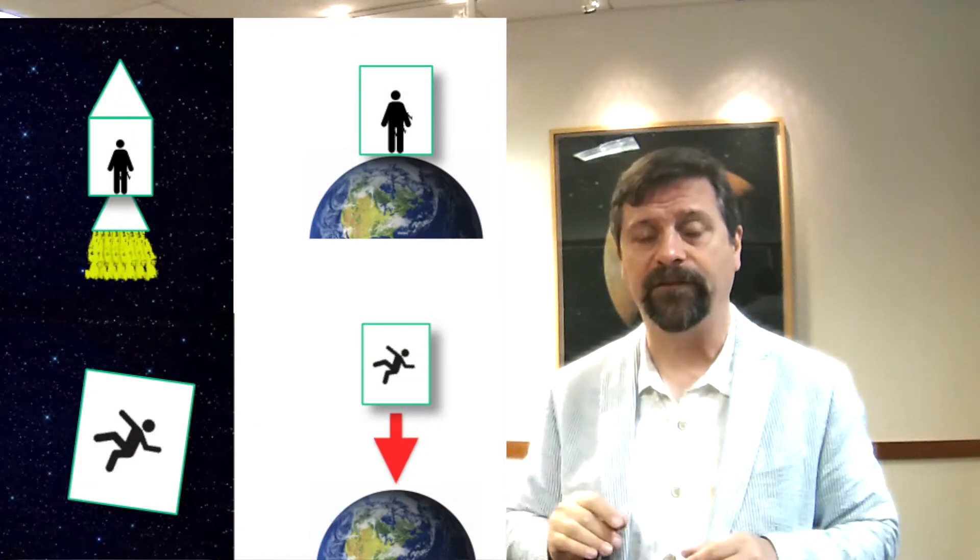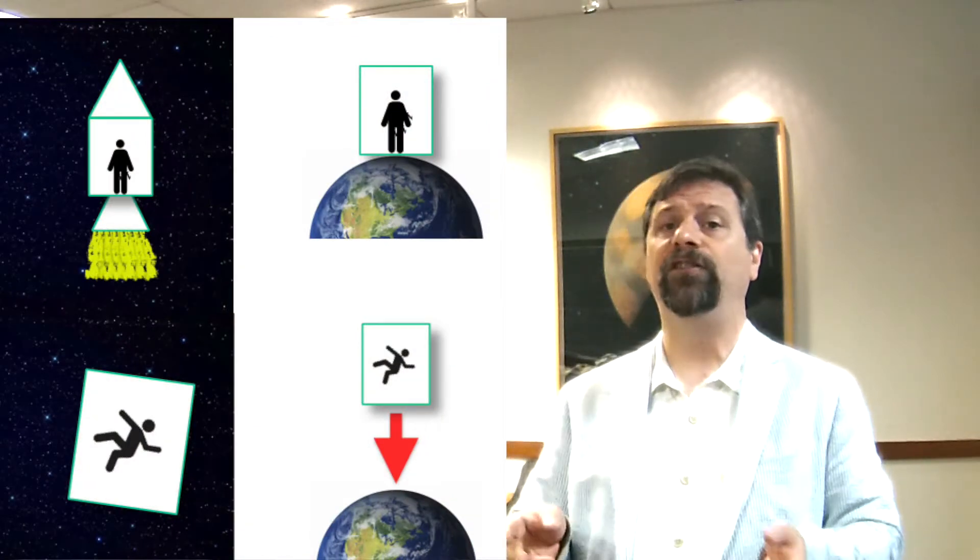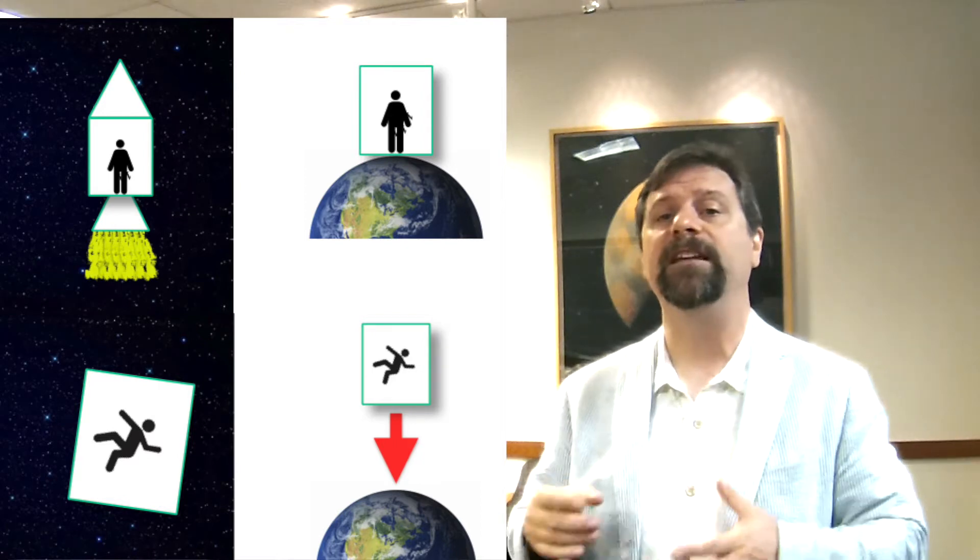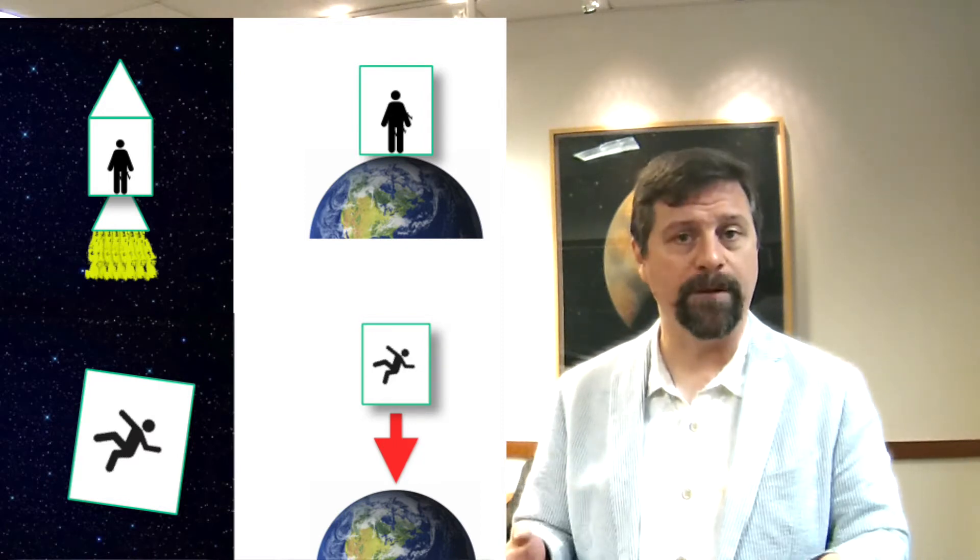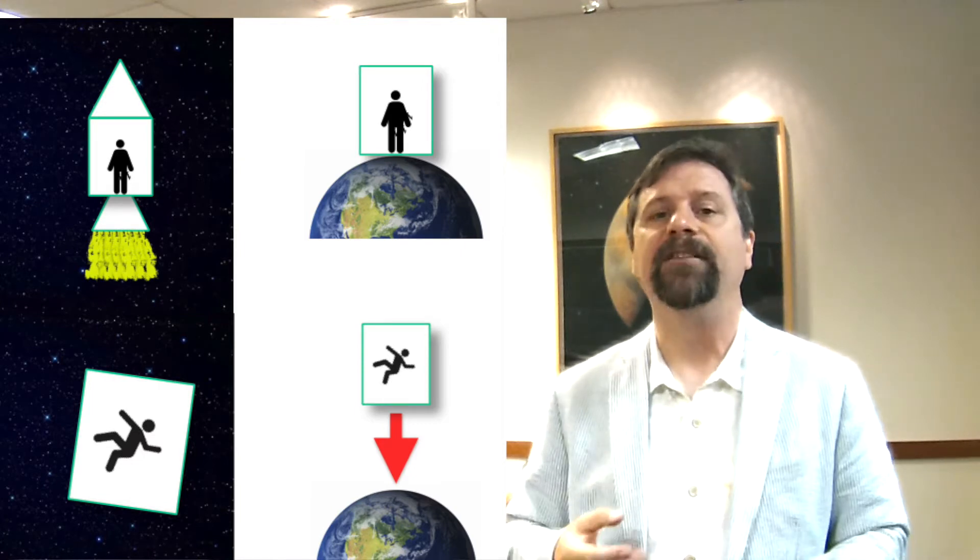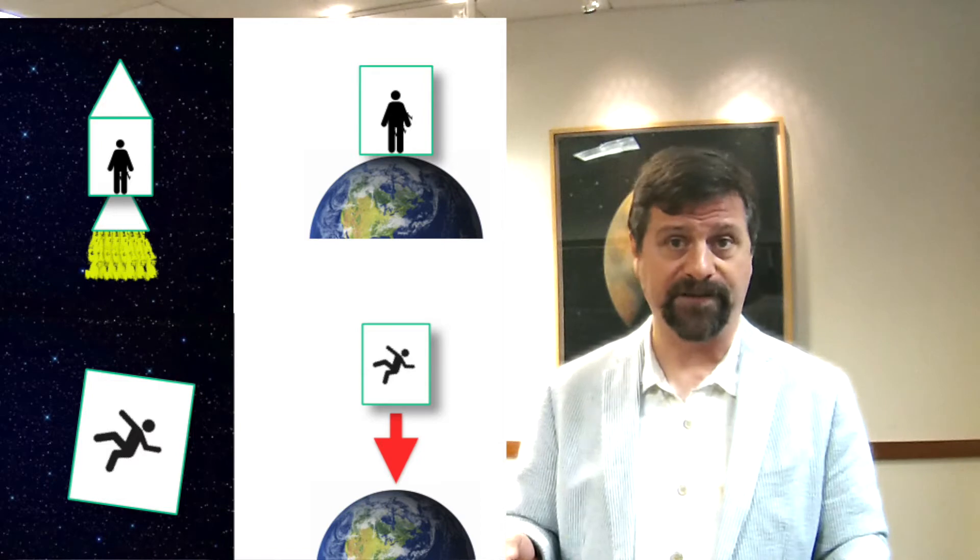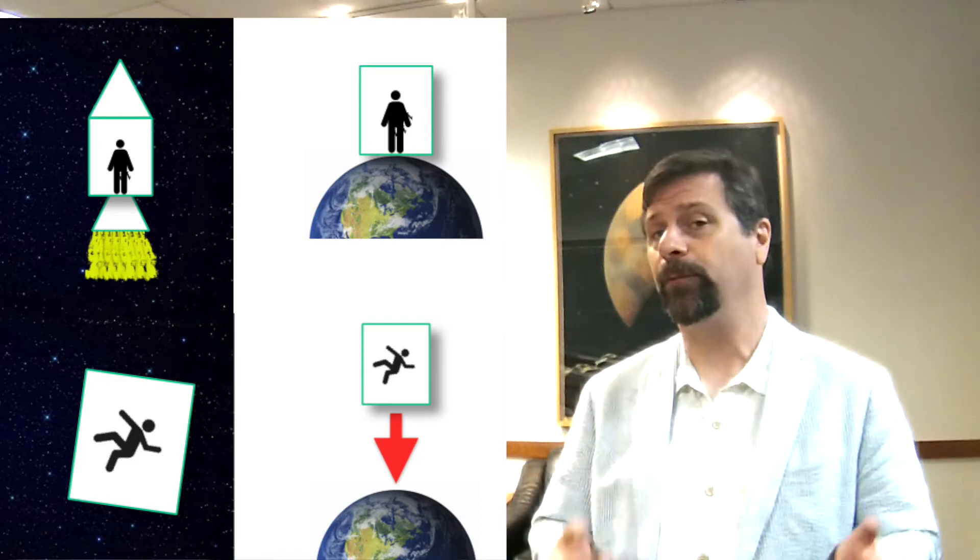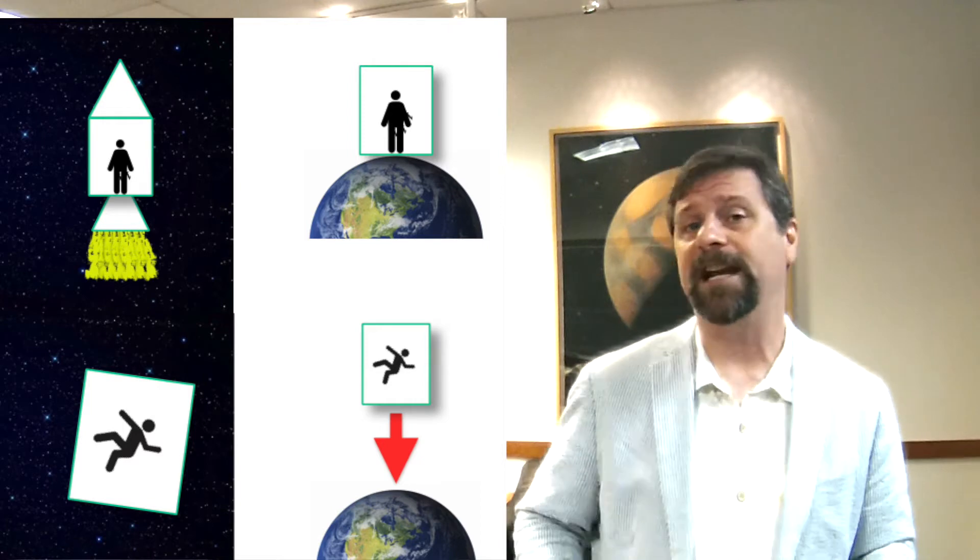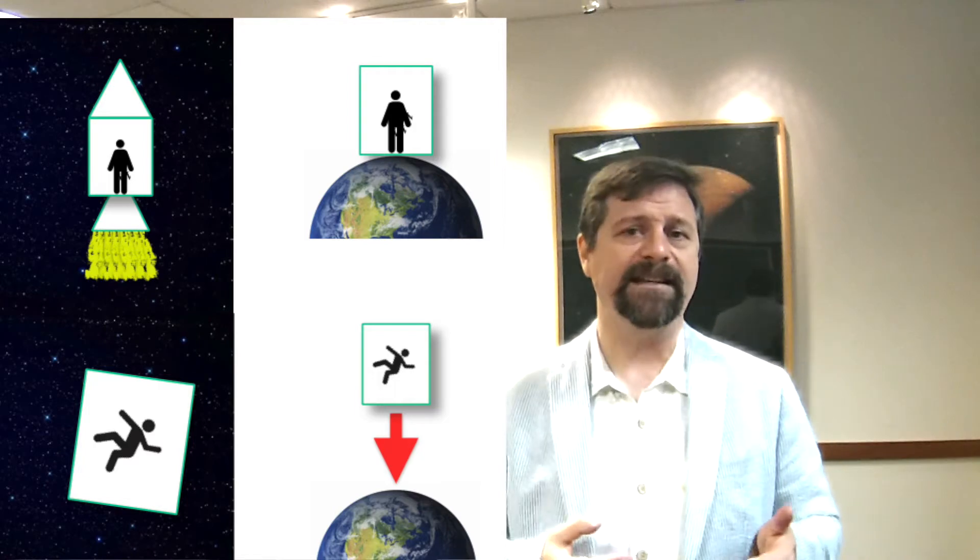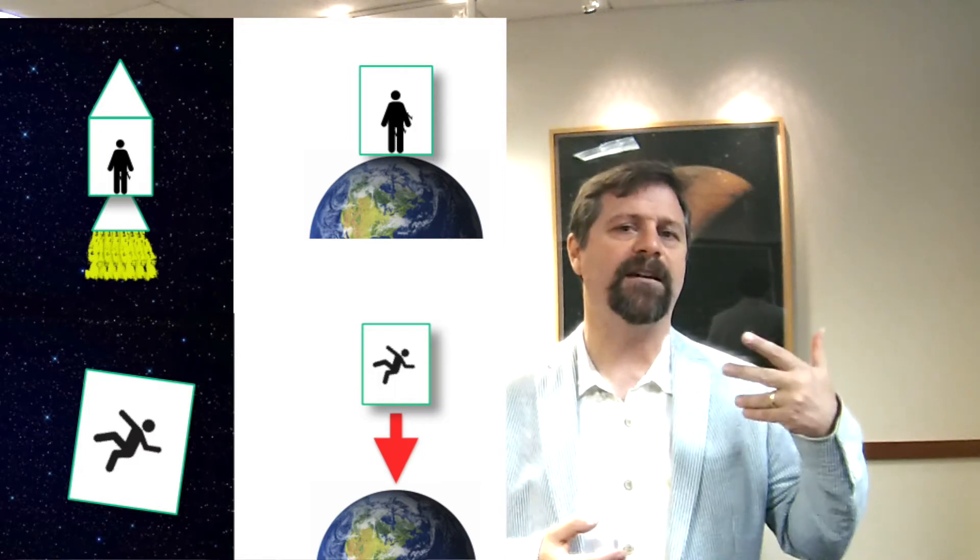So those are our four situations. One, completely out in the middle of space with nothing around us. Two, freely falling inside that same room, but the room is falling in a gravitational field and we're not worried about wind resistance or burning up in an atmosphere. The next one is we're standing on the surface of the earth and we're seeing how things work inside the room. And the fourth one is we're in a rocket that's accelerating upwards at 9.8 meters per second squared.